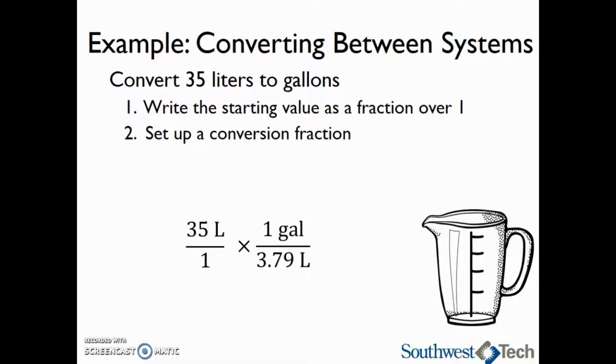Now it's very important that we write this correctly. In this case, it's correct to write the 3.79 liters on the bottom, 1 gallon on the top, because we are trying to get rid of the unit of liters. And the only way that we can do that is if we have liters on top and liters on the bottom. So now that we have liters on top and liters on the bottom,